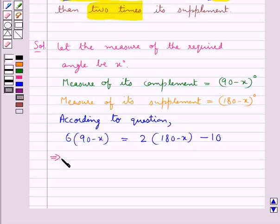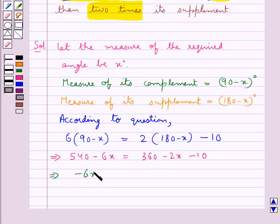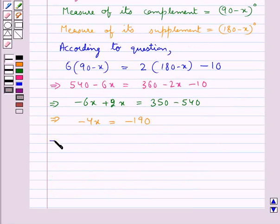This gives us 540 minus 6x is equal to 360 minus 2x minus 10. This gives us minus 6x plus 2x is equal to 350 minus 540. That is we have minus 4x is equal to negative 190. That is we have 4x is equal to 190.